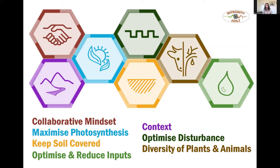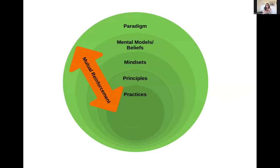Some of these principles may be familiar to you — you might call them different things or have others you farm and ranch by. We talk about having a collaborative mindset: collaboration with nature, with relationships, with people and communities. Looking at maximizing photosynthesis, keeping soil covered, optimizing and reducing inputs to improve soil health, thinking about your context.